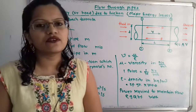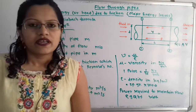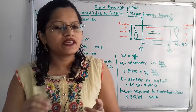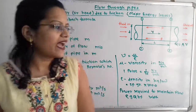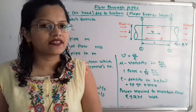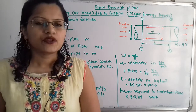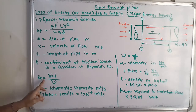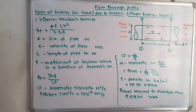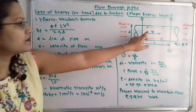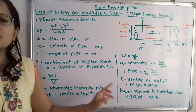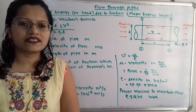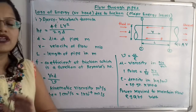F is the coefficient of friction, which is a function of Reynolds number. If in a question F is not given directly, we must first calculate the Reynolds number, decide its range, and then calculate F. Reynolds number RE = V × D / ν, where ν is the kinematic viscosity. V and D are given, and ν — kinematic viscosity — has the standard unit of meters squared per second.